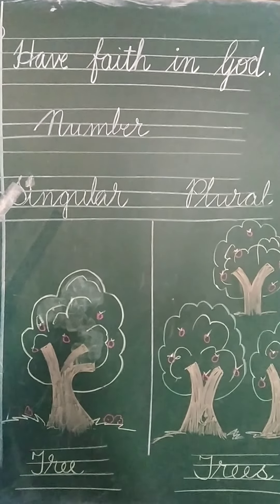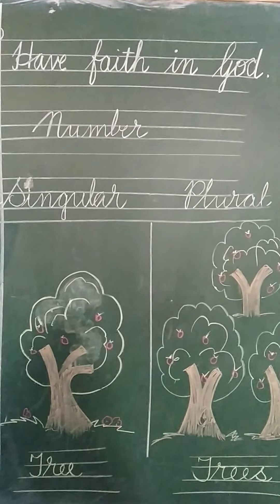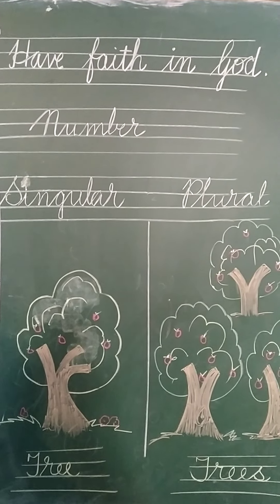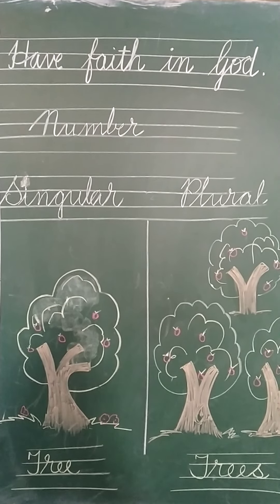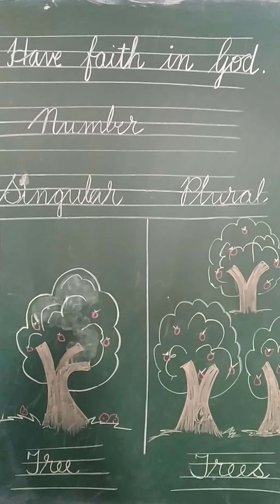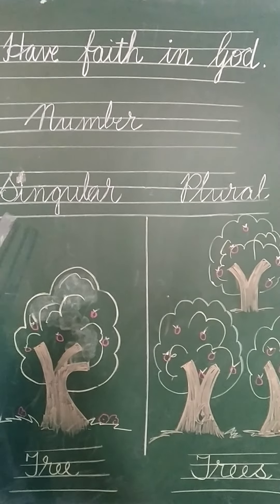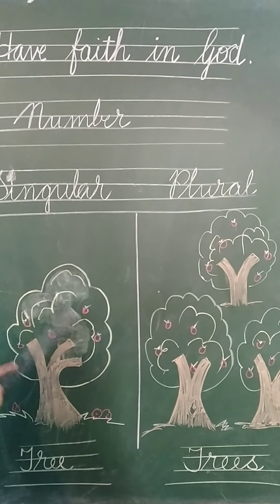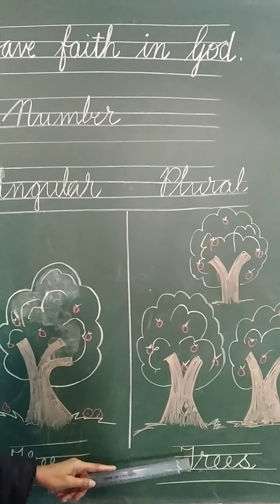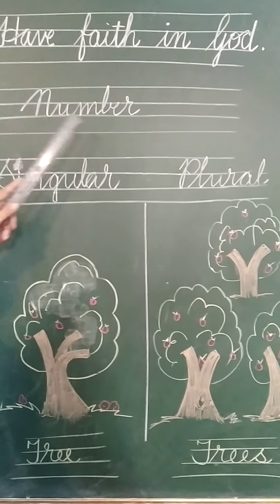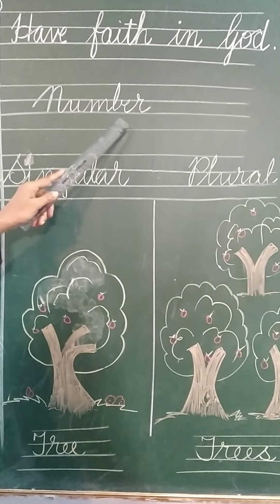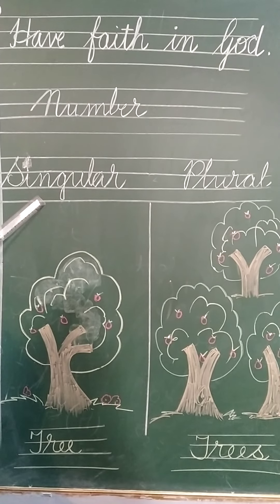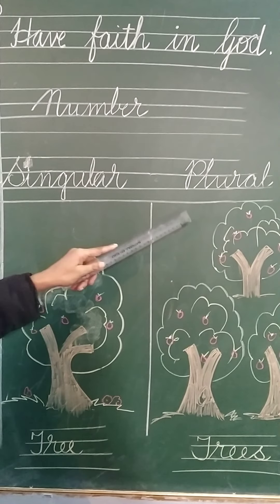Today we will learn about number. Students, you know very well when the noun is single — when we have only one noun, that is called singular. If more than one, then it is called plural. So you have to write down the heading: number. There are two types of numbers: singular and plural.